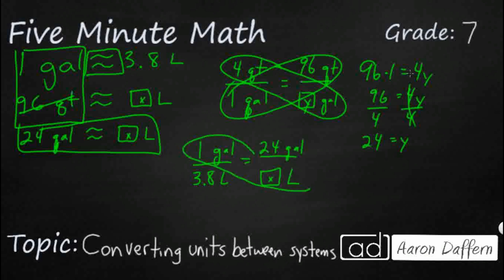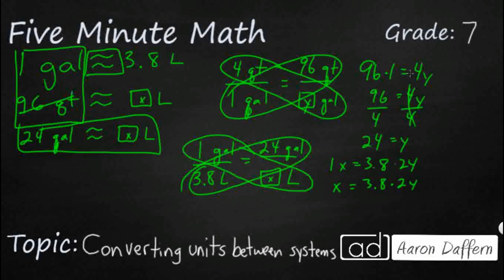Take a look at what we've got here — a little cross multiplication. We simply have 1 times X equals 3.8 times 24. So this is just X, and my answer is simply going to come from 3.8 times 24. I just need to do that multiplication and I'll get my equivalent number of liters.